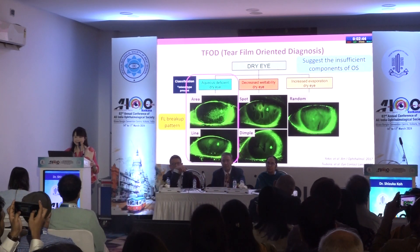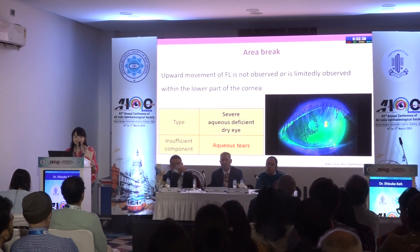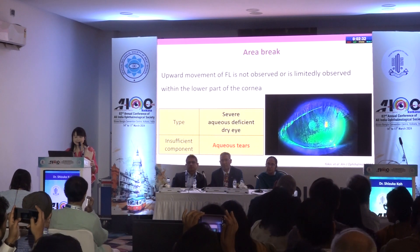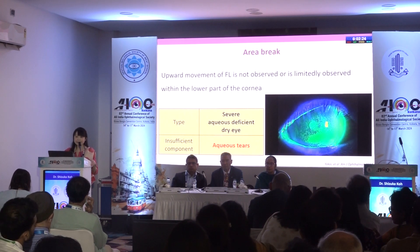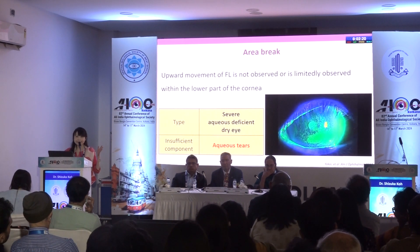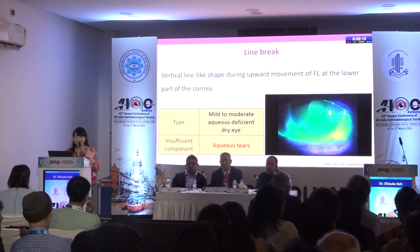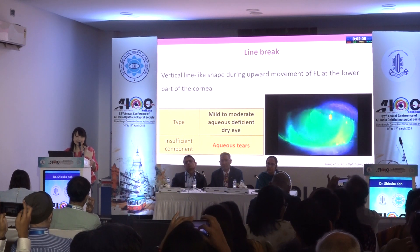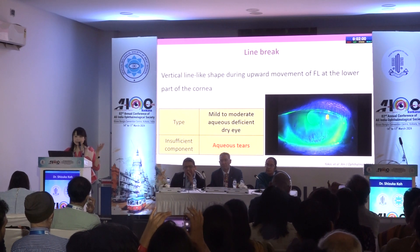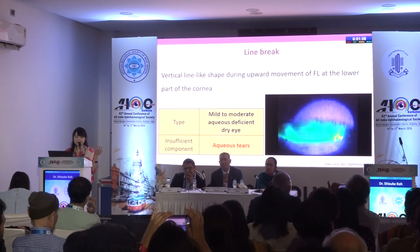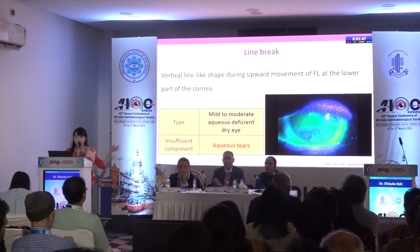Let's start with aqueous deficient dry eye. This is an area break — this is a severe aqueous deficient dry eye. The insufficient component is aqueous tear, so there is no upward movement after the blink, and it is only limitedly observed in the lower part of the cornea. You can usually see a lot of corneal epithelial damage. This is a line break — mild to moderate aqueous deficient dry eye. You can see a vertical line-like shape during upward movement in the lower part of the cornea, right after the blink.